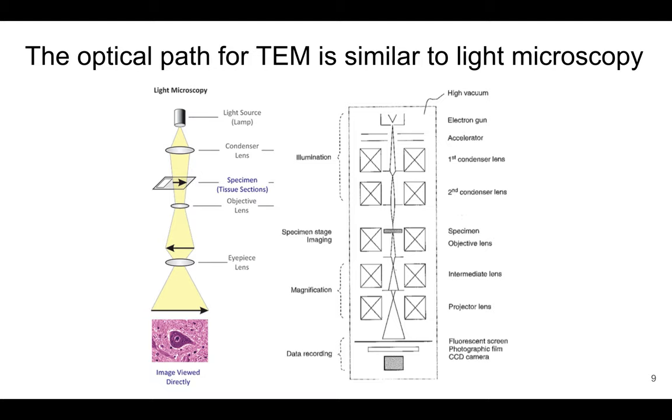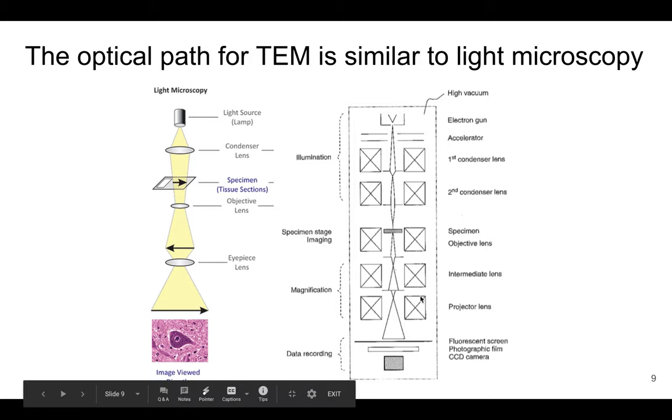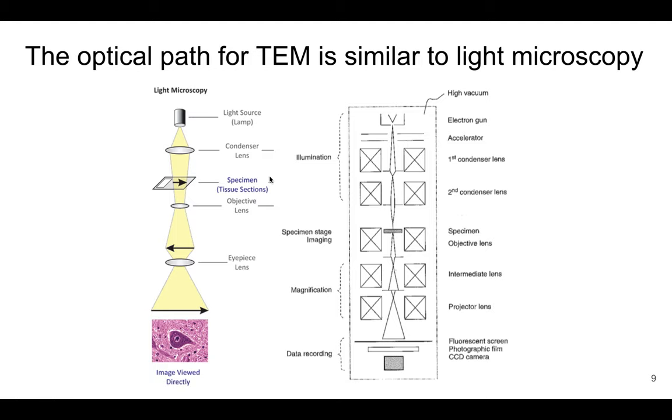So the first one I want to draw your attention to is this schematic here, which shows the optical path, and you might remember we drew some of these for light microscopy. That's what you see here, and I want to compare that to TEM. So with light microscopy, we have the light source, the condenser which focuses on the sample, and then the objective lens and the eyepiece which go to the eye, and we get a magnified image.